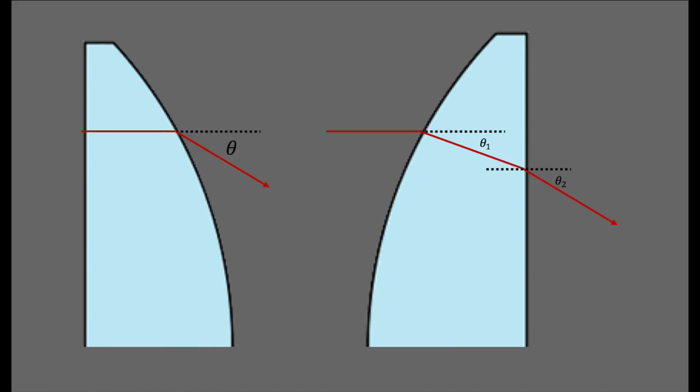Spherical aberration can be corrected by minimizing the rays amount of refraction at each surface. Spherical aberration is minimized when the refracted angles are equal at each surface. This can be achieved by bending the lens, which is also known as changing the lens's shape factor.